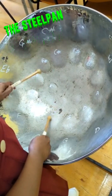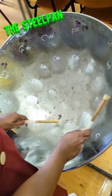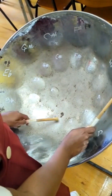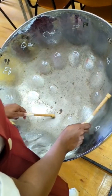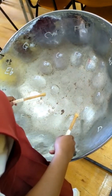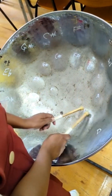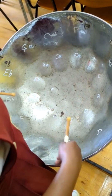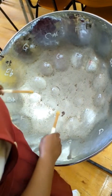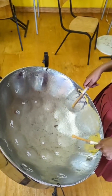The Steelpan is the national instrument of Trinidad and Tobago, and it produces a spectrum of sounds rich in overtones. An overtone is a frequency above the fundamental frequency of a sound.